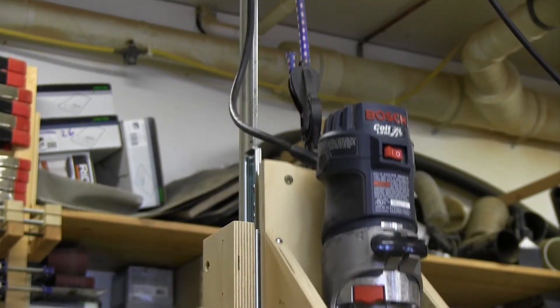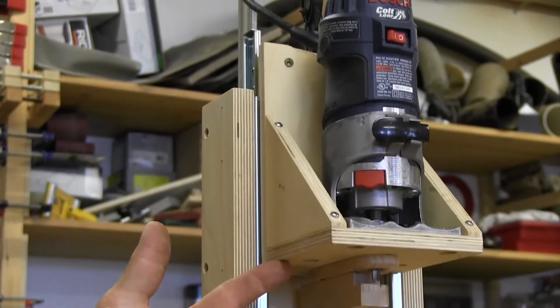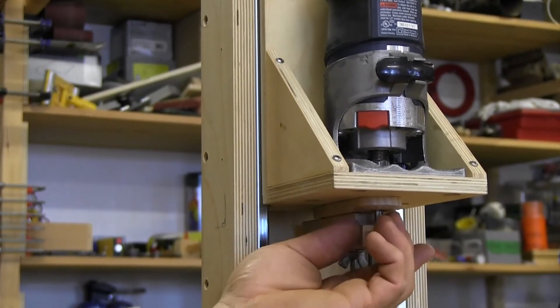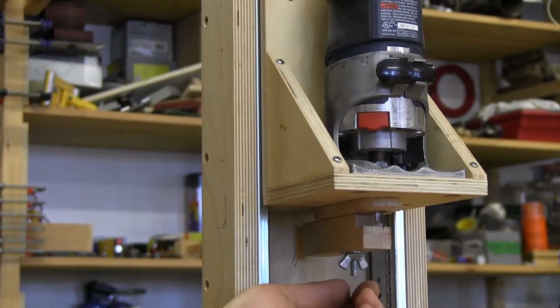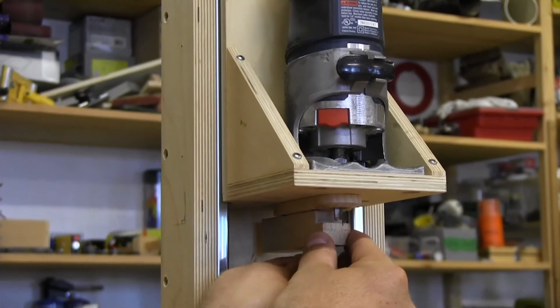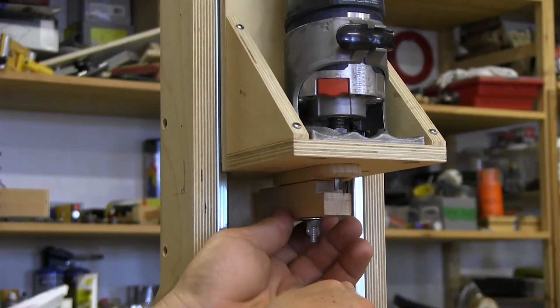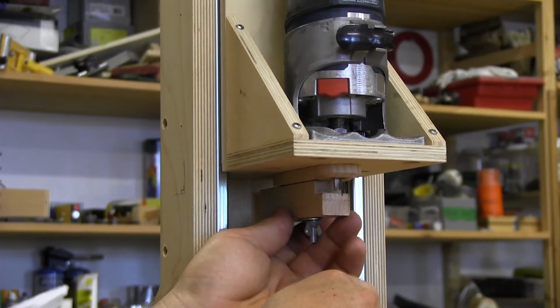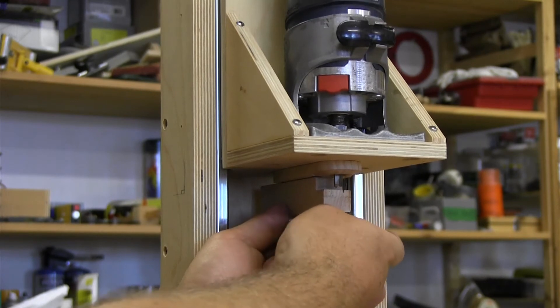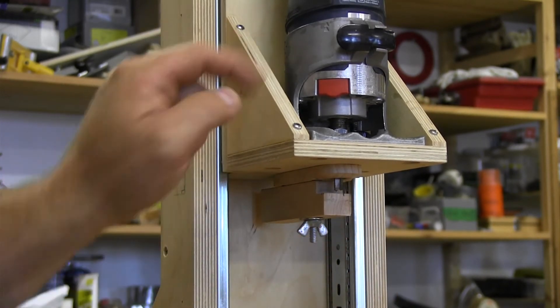With just one finger, I can move this up and down very easily. Depending on what size binding and purfling you're going to use, you simply loosen this off and you can adjust the depth of the cut very simply there. You can adjust the height of the cut by adjusting the router.